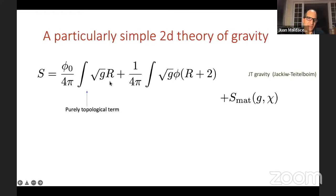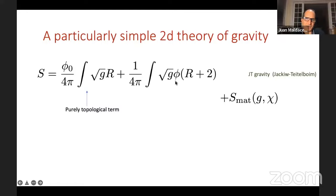There is a particular two-dimensional theory of gravity intensively studied in recent years: the Jackiw-Teitelboim (JT) theory of gravity. If you write the Einstein action in two dimensions, the Einstein-Hilbert term is purely topological — it doesn't depend on the geometry at all, just gives a number proportional to the topology, weighted by a constant S_0. We can introduce an extra scalar field φ — a dilaton — and add it in a particular way, giving a slightly more interesting theory with simple dynamics.